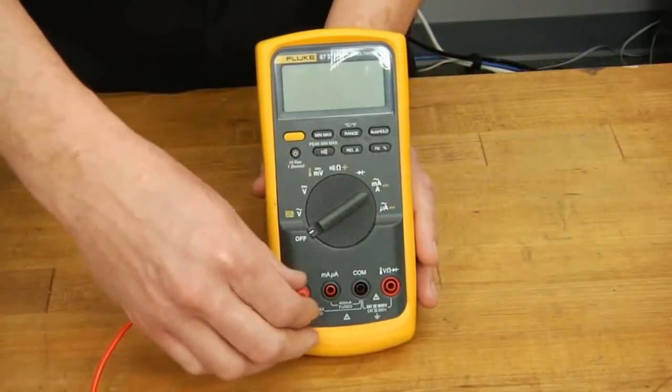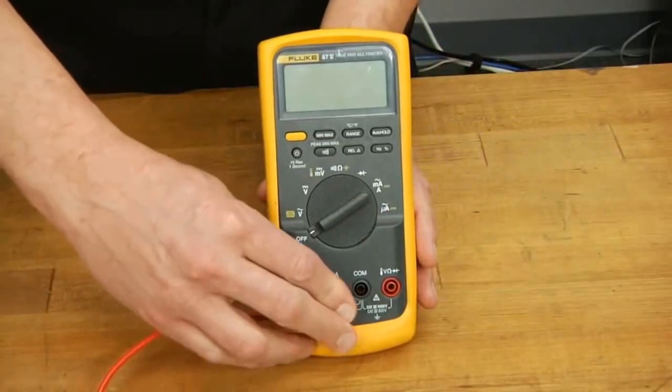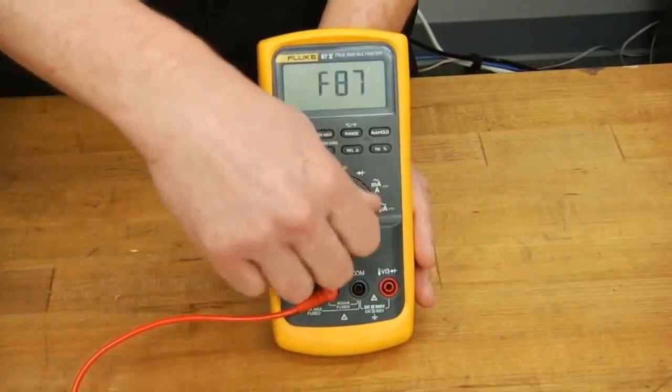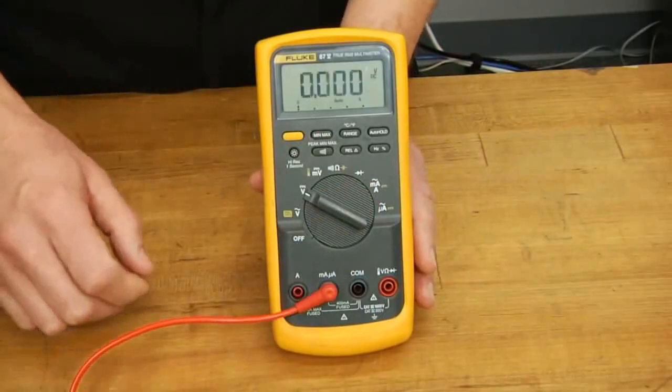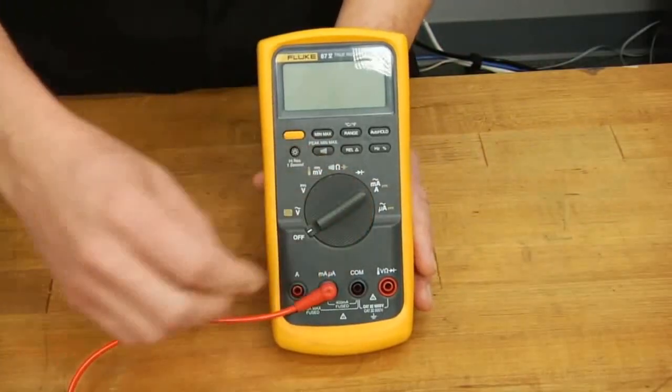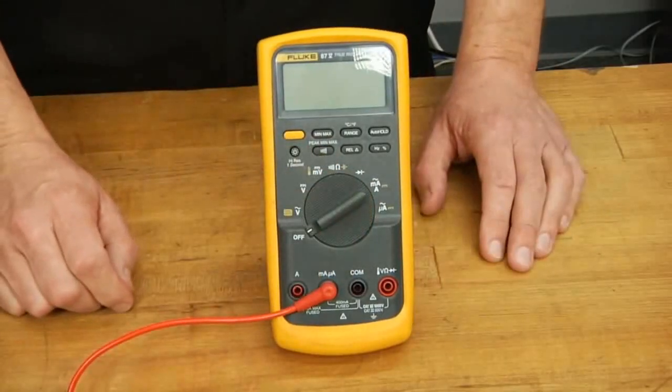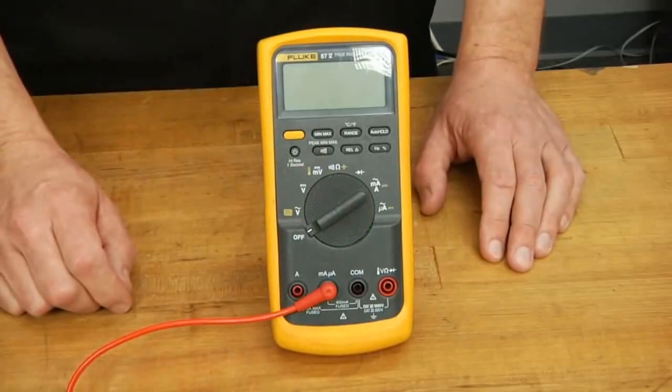To test the milliamp fuse, we move the lead over to that position and do the same thing. That beep tells us that our fuses are good. If we did not hear a beep, then our fuse would be blown and we would need to service the meter before using it.